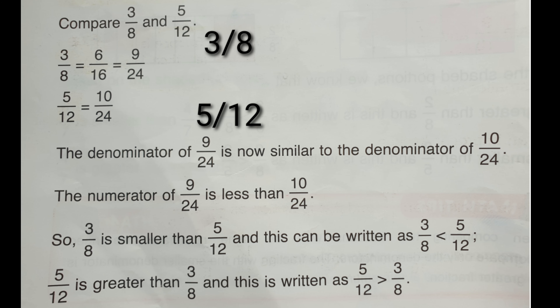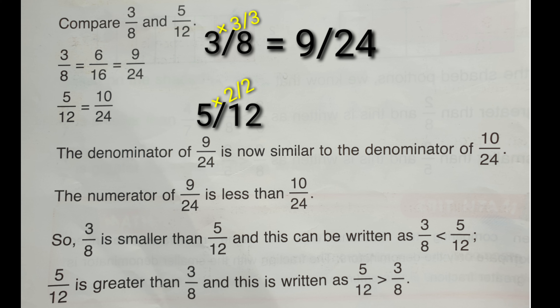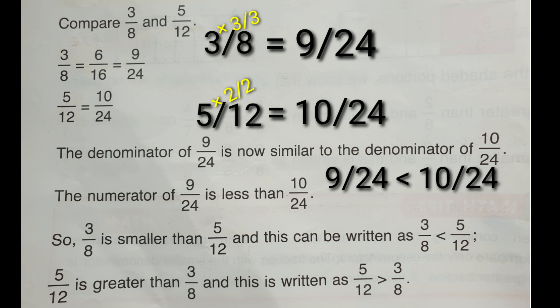Let's compare three eighths and five twelfths. To equalize the denominators, multiply three eighths by three thirds and five twelfths by two halves. The equivalent fraction of three eighths is nine twenty-fourths, and five twelfths becomes ten twenty-fourths. Therefore, nine twenty-fourths is smaller than ten twenty-fourths, so three eighths is smaller than five twelfths.